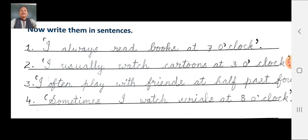For example, first number: 'I always read books at seven o'clock.' After writing the sentence, put a single inverted comma, then a full stop. Second number: 'I usually watch cartoons at three o'clock.' After writing the sentence, put a single inverted comma, then a full stop.